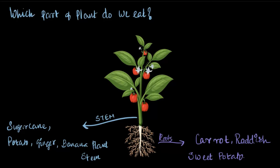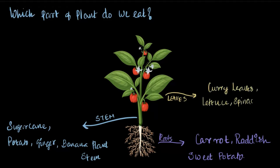Moving on to the next part of the plant, we have leaves. What leaves do we consume? Curry leaves, lettuce, spinach, and fenugreek leaves are some of the examples of the leaves of a plant that we consume as food.